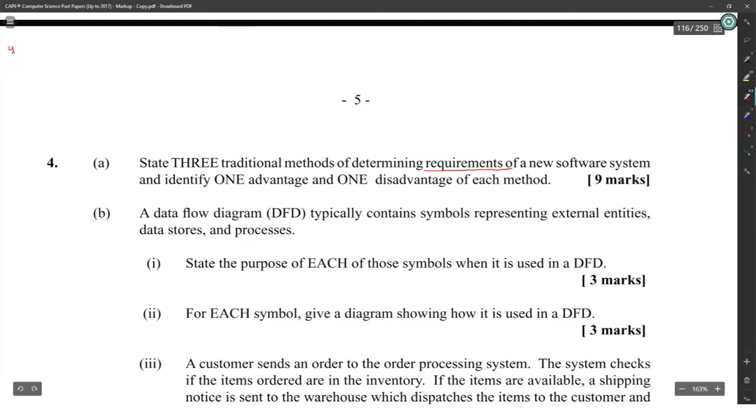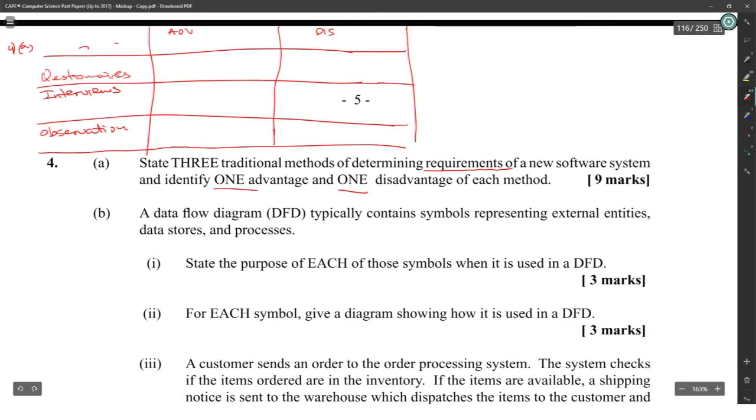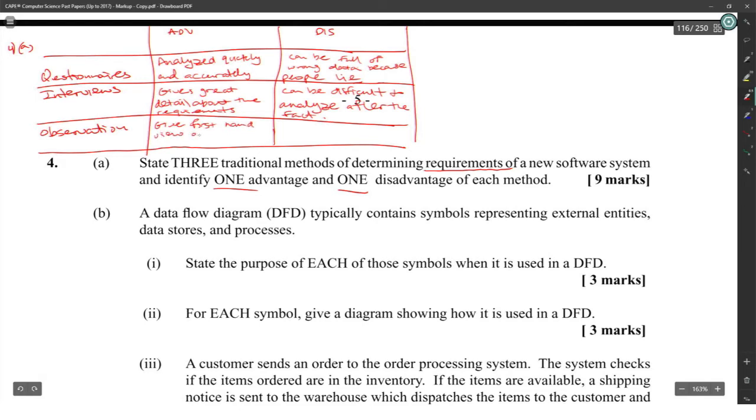Let's go for questionnaires, interviews and observation. Advantage and disadvantage for each. What's the advantage of questionnaires? Questionnaires can be analyzed quickly and accurately. Disadvantage: can be full of bad data because people lie. Interviews: advantage gives great detail about the requirements. Disadvantage: can be difficult to analyze after the fact. Observation: gives first-hand view of the old system. Disadvantage: can be very time consuming. I didn't use review of documents but review of documents is possible too.